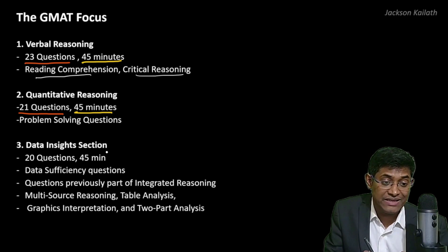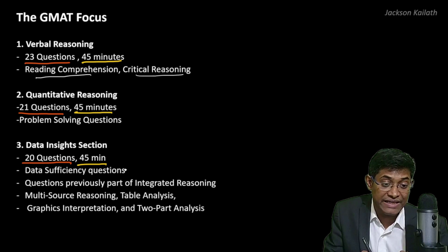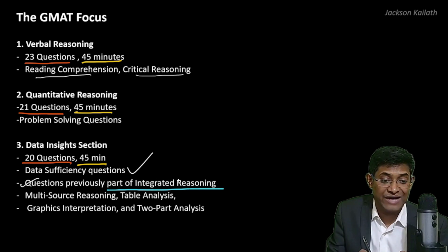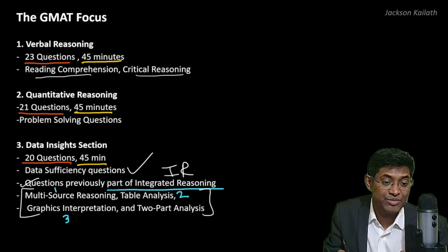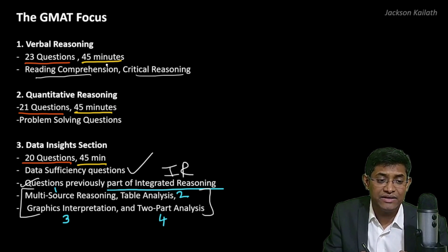When it comes to the data insights section, you will be given 45 minutes to attempt 20 questions. On the data insights section, you will have data sufficiency questions and questions which were previously part of integrated reasoning — specifically four types: multi-source reasoning, table analysis, graphics interpretation, and two-part analysis. So that's how these sections are structured, along with the number of questions and time allocated.